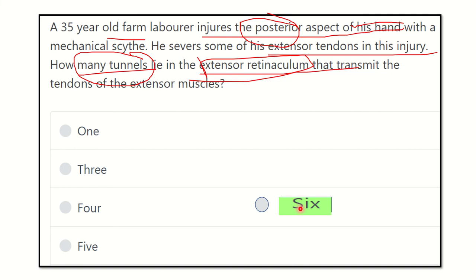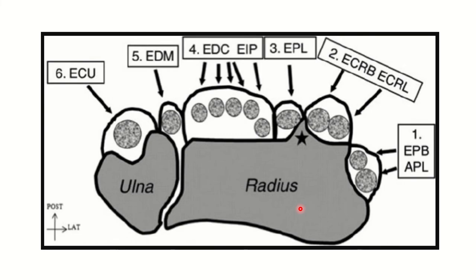The options are one, three, four, five, or six. We have to find out how many tunnels are present in the extensor aspect of the hand. Here we can see the tendons — two tendons, another two, four tendons — they are separated from each other by fascial structures, and each of these areas is called a compartment. We can see compartments numbered one through six.